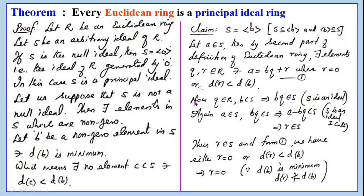Now Q belongs to R and B belongs to S. Since S is an ideal, B times Q belongs to S. Again, A belongs to S and BQ belongs to S. Since S is an ideal and it is a subgroup, A minus BQ belongs to S. But A minus BQ is nothing but R. This implies R belongs to S. Thus R belongs to S, and from 1 we have either R equals 0 or D(R) is less than D(B). But we know D(B) is minimum, so D(R) less than D(B) is not possible.